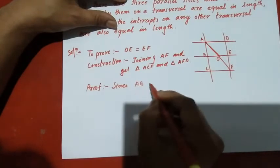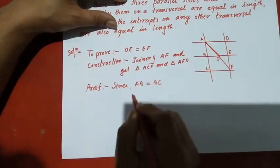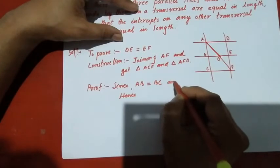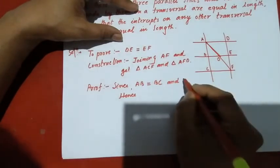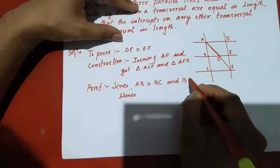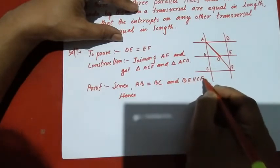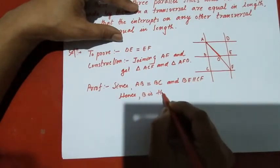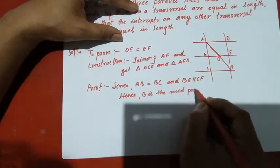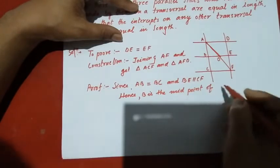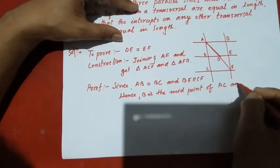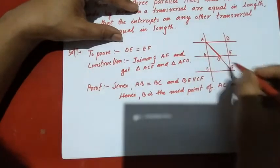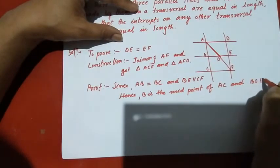Since AB is equal to BC, and BE is parallel to CF, therefore B is the midpoint of AC. Also, since BE is parallel to CF, by the converse of the midpoint theorem, O is the midpoint of EF.